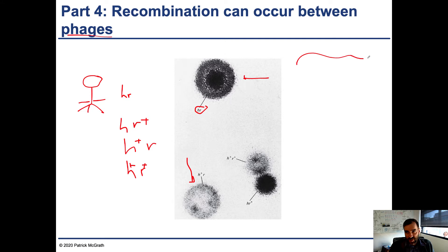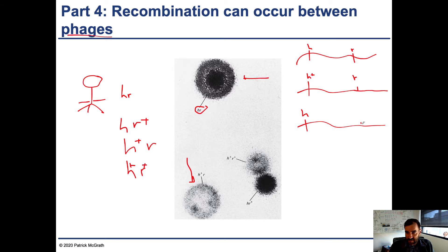The phage has its genome and you have the location of the gene, so the four combinations will look something like this, where the genes are at different positions and then you have the different allele combinations between them.